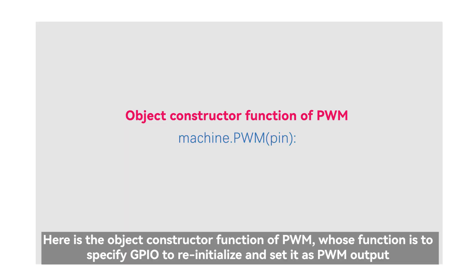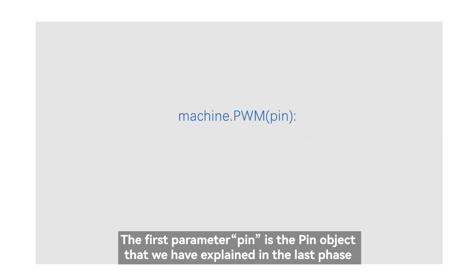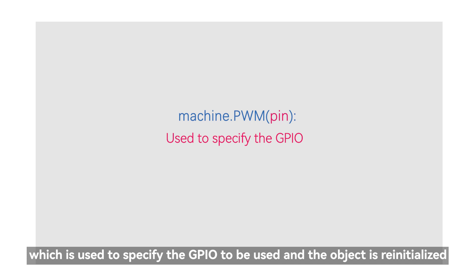Here is the object constructor function of PWM, whose function is to specify GPIO to reinitialize and set it as PWM output. The first parameter, pin, is the pin object that we have explained in the last phase, which is used to specify the GPIO to be used and the object is reinitialized.